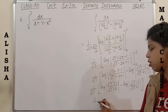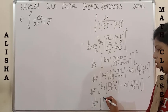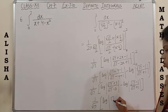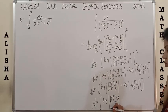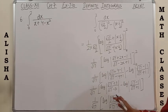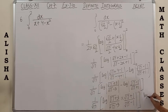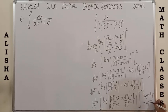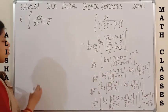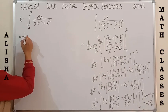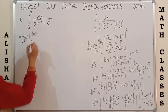This is in the form of log m minus log n, which becomes log(m/n). So it becomes log of [(√17 + 3)/(√17 - 3)] × [(√17 + 1)/(√17 - 1)], using the formula log m - log n = log(m/n), where the second term becomes reciprocal.